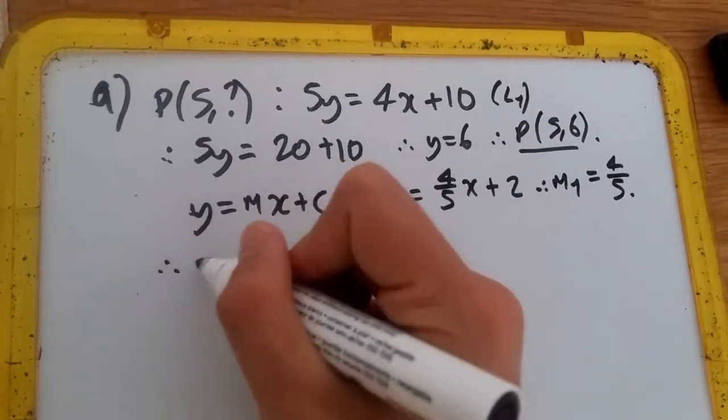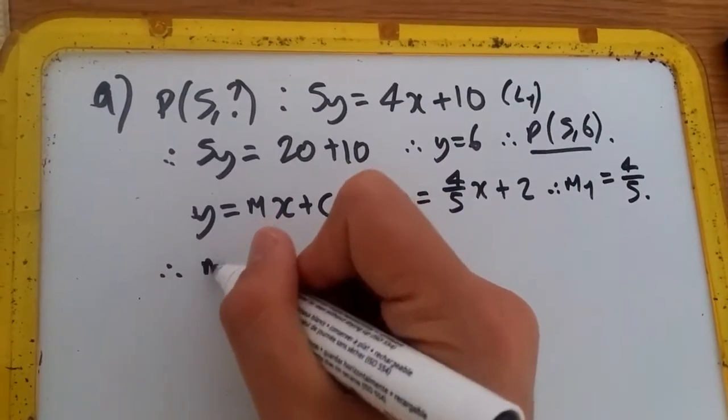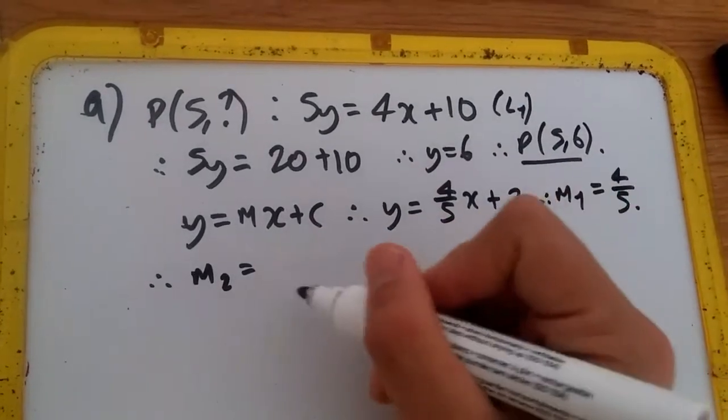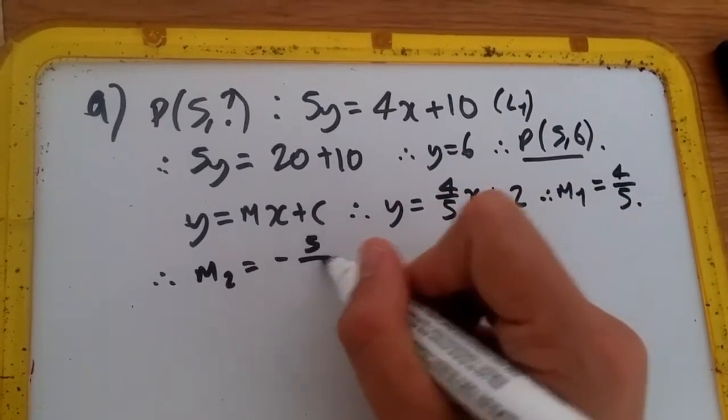Since line L2 is perpendicular, M2 is just multiply by a negative sign and take the reciprocal, so we've got -5/4.